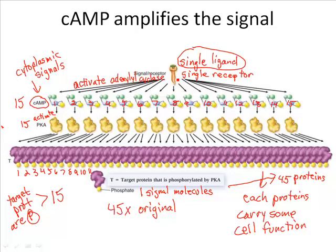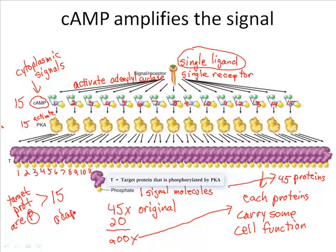Now recall, there's not just one receptor on the surface of a cell — there may be 20 of these receptors on the cell. So if every receptor amplifies the signal by 45 times and there are 20 receptors, we can see that if you do some simple math, we'd end up with about 900 times the original signal — 900 of these proteins are activated in the cell to carry out some cellular response. Why do we need such amplification? Because in order for a cell to adapt to its environment, we need that response to be quick and robust.